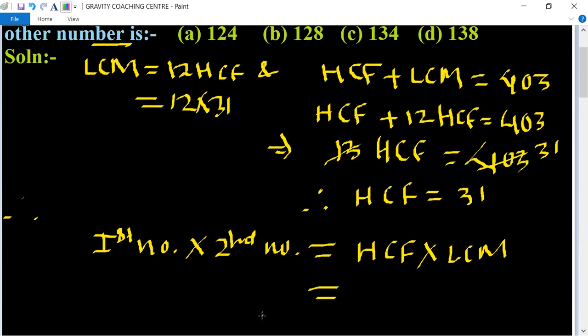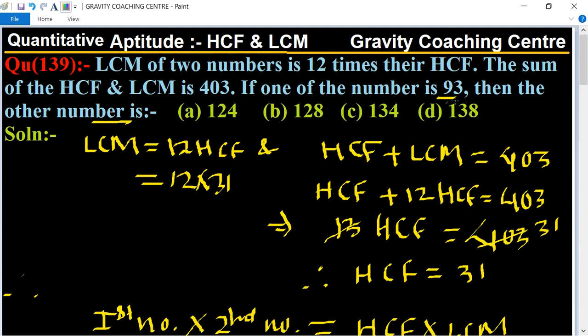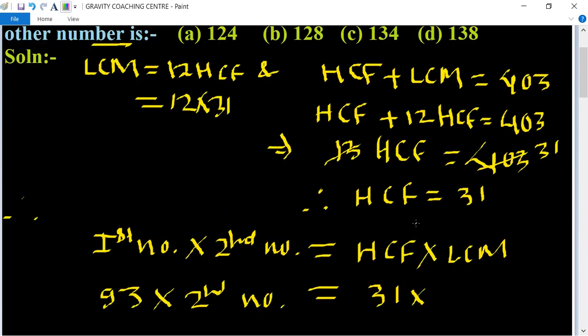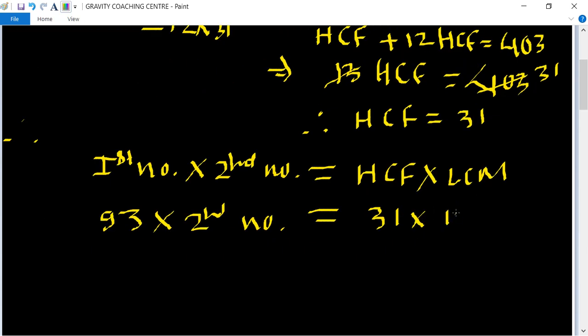First number equals 93 into second number. HCF equals 31 and LCM equals 12 into 31. Therefore second number or other number equals 31 multiply 12 multiply 31 divided by 93.